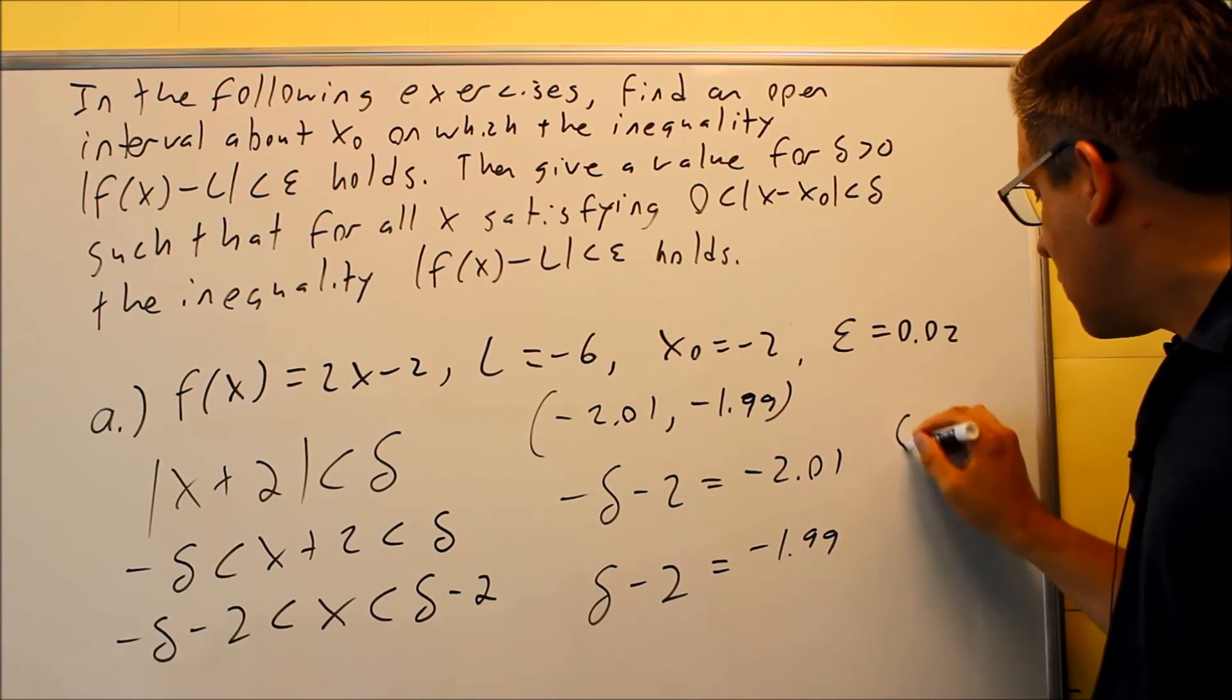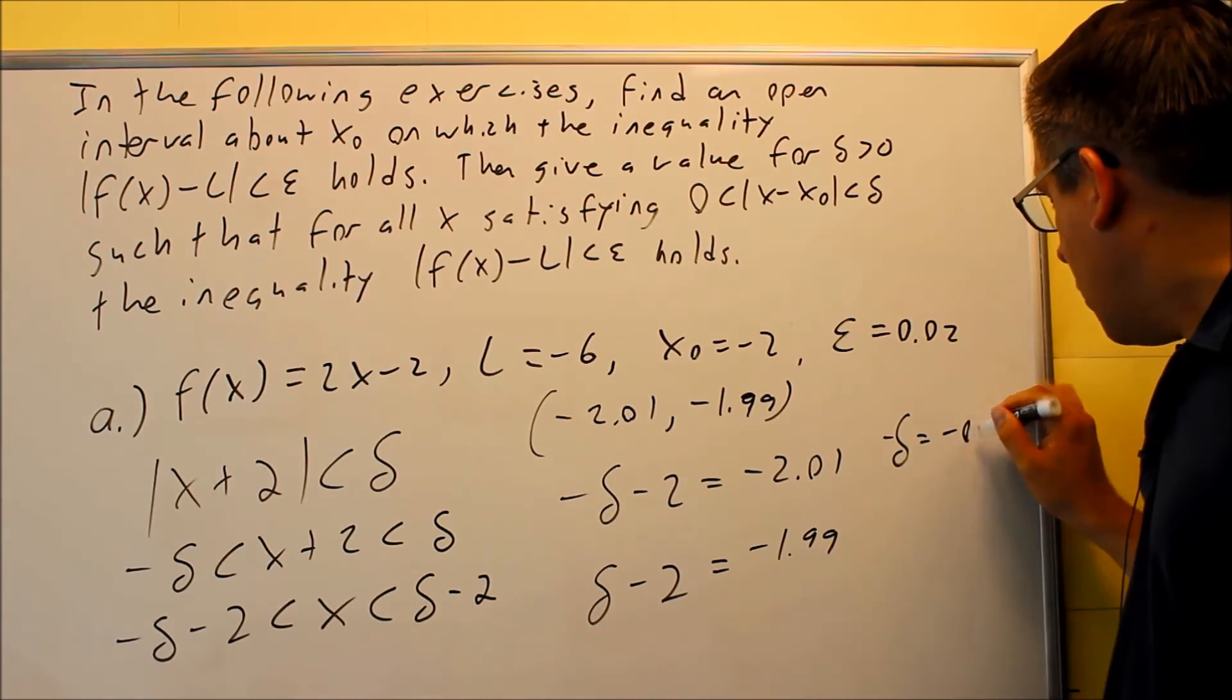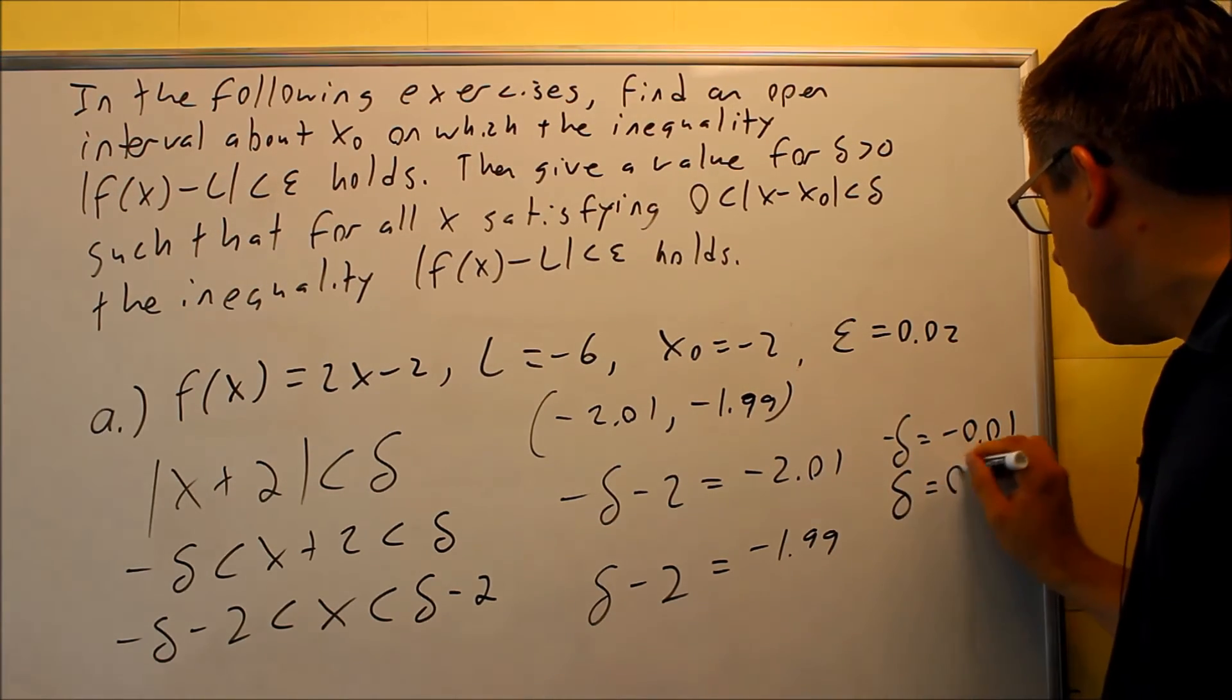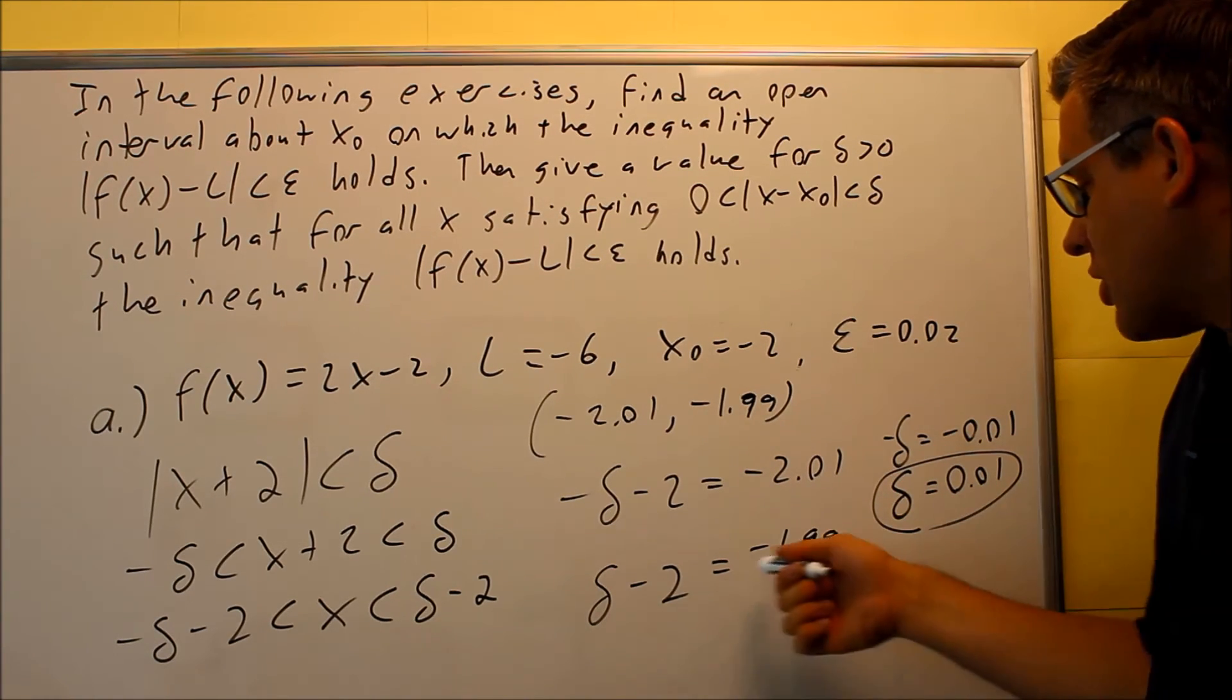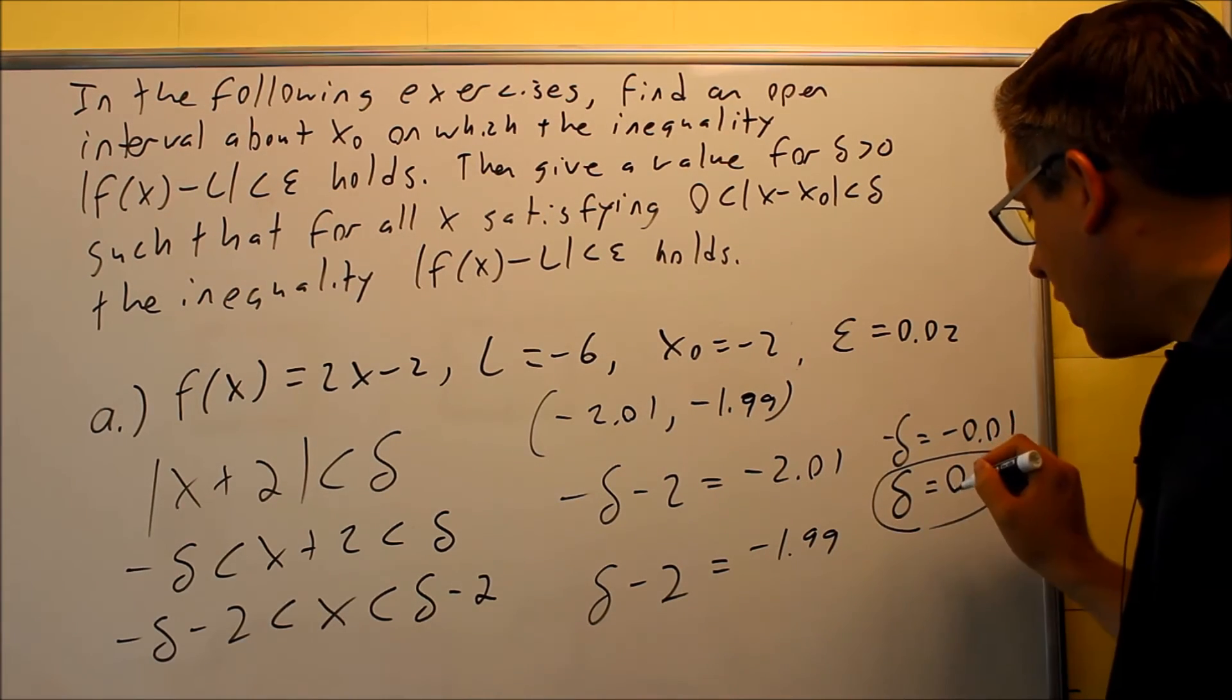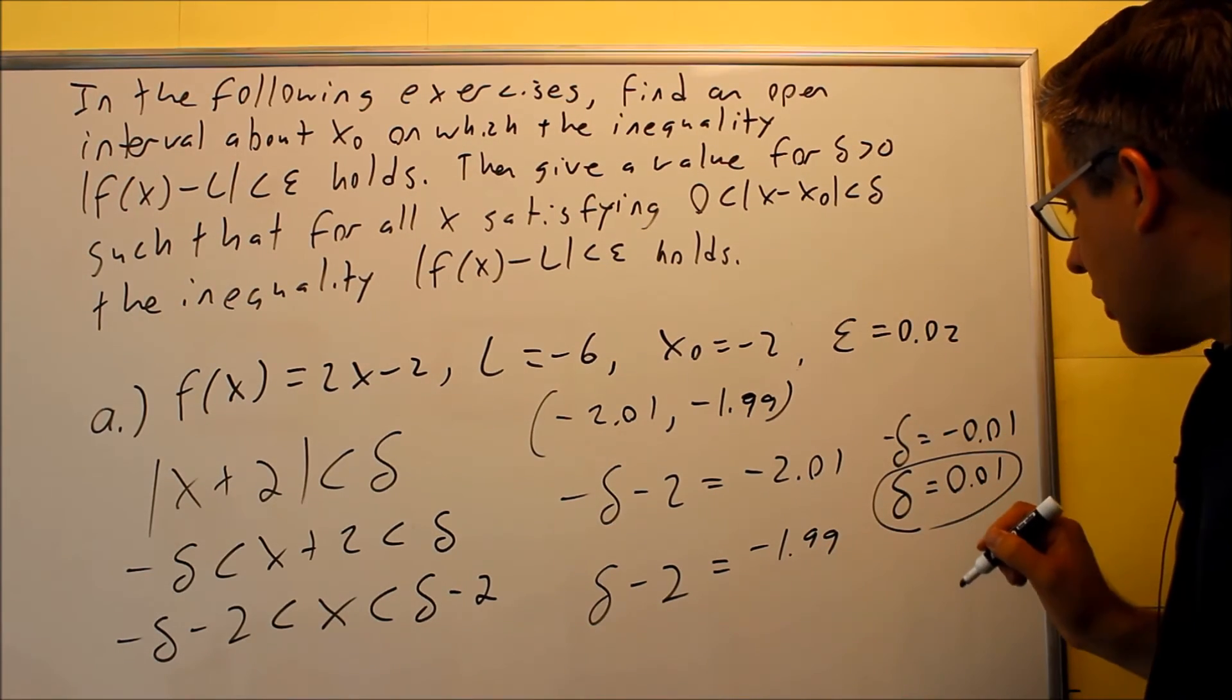So if you add 2 to both sides, negative delta is equal to negative 0.01, and then dividing both sides by negative will give you 0.01, so that's going to be what the delta has to be. And notice if we were to add 2 over here on this side, we would have gotten exactly the same answer, we would have gotten also 0.01, and then that would be your answer.